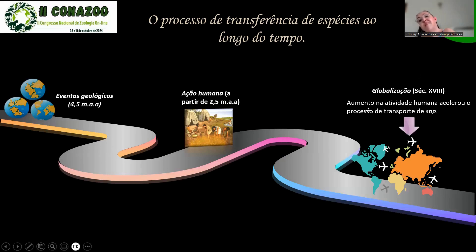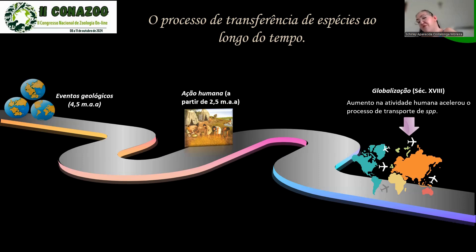Para piorar, com a globalização a partir do século XVIII e nossa rápida escalada tecnológica, vimos as atividades humanas e o comércio sendo feitos de forma muito mais acelerada e intensa. Hoje consigo ir ao outro lado do planeta em 48 horas ou menos. Isso facilitou o transporte: uma espécie ornamental bonita no Japão — como a carpa — acaba sendo trazida e espalhada para o mundo todo, um animal que nunca teria vindo se não tivéssemos trazido.